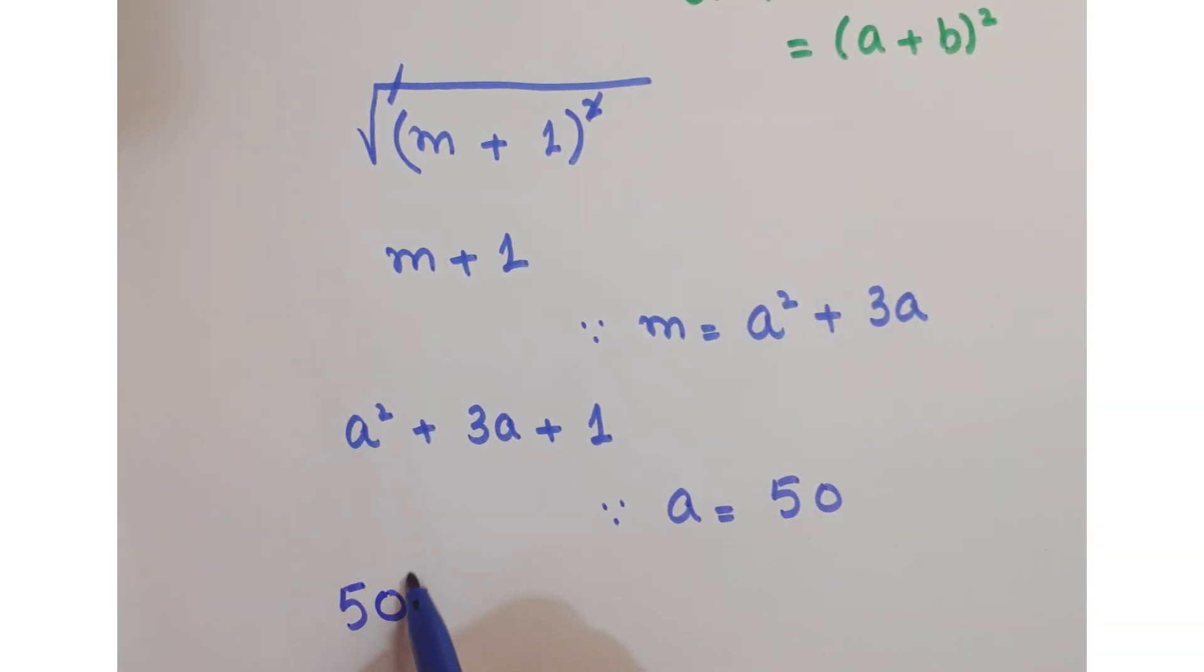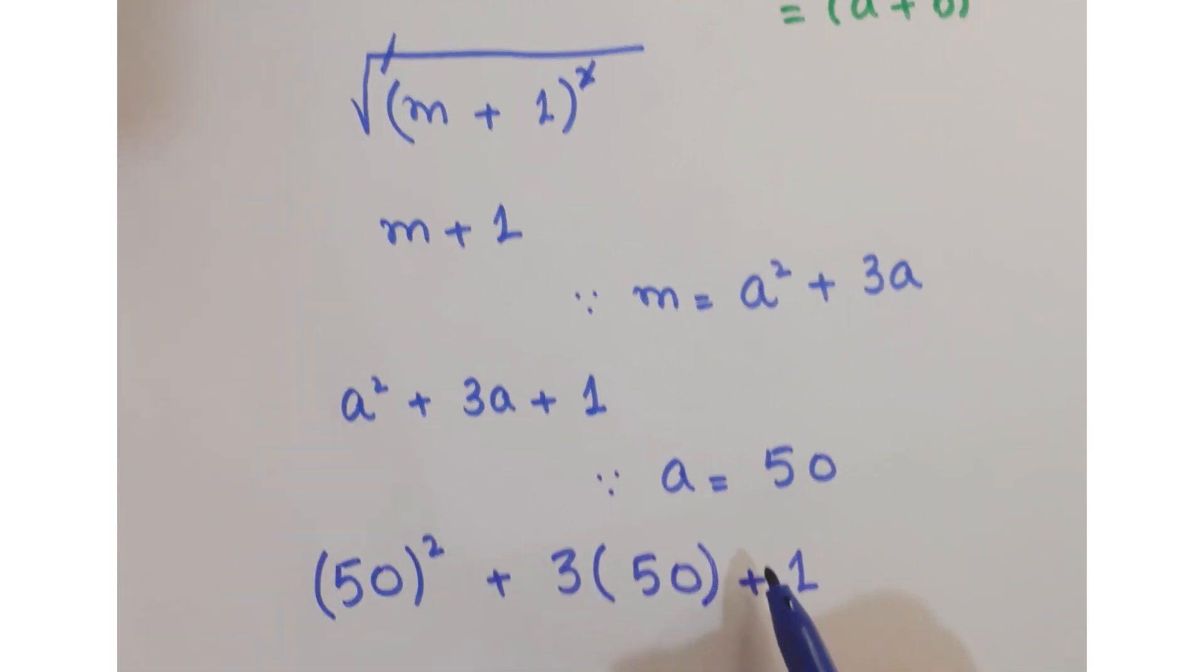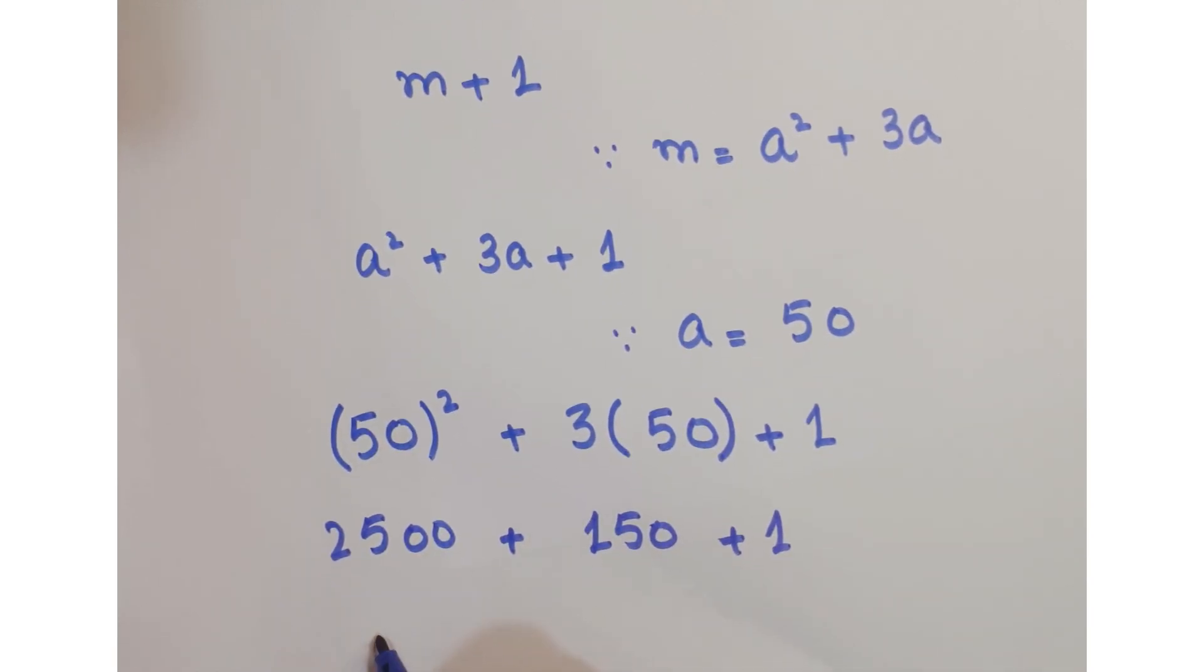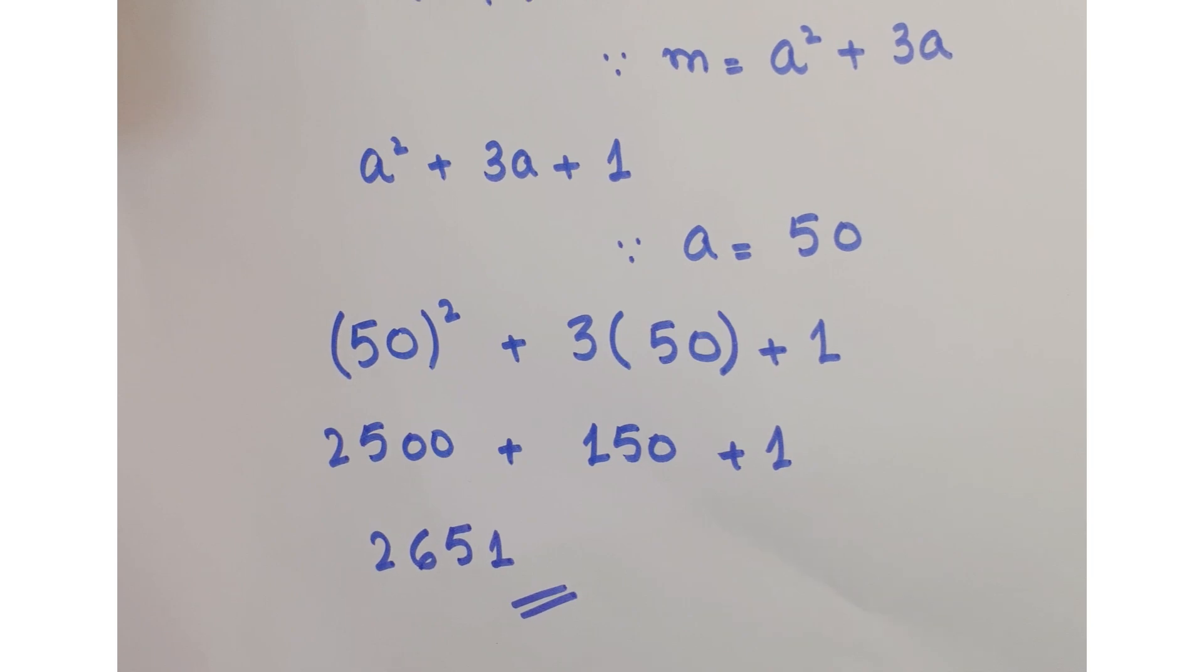So you get here 2,500 plus 150 plus 1. When you add up all these, you get 2,651. And this is our required answer after simplification.